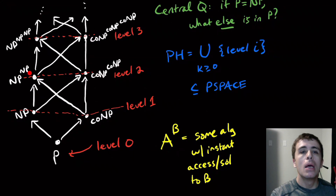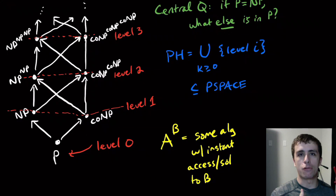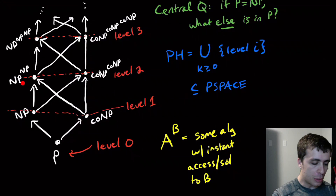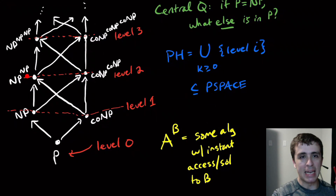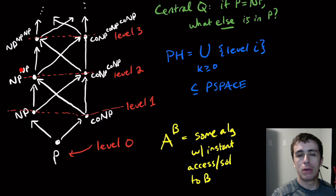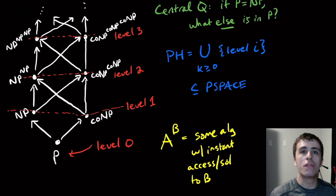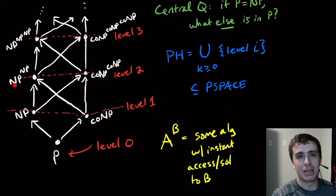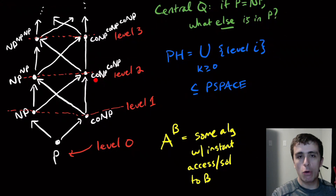So for NP, that means you can pick any language you want — say SAT — and you can write down a formula and it'll instantly tell you whether or not that formula is satisfiable. Therefore NP raised to the power NP means I have a non-deterministic polynomial number of queries to a SAT oracle. I can write down polynomially many SAT formulas and it will solve all of them. co-NP raised to the power co-NP is the same idea.